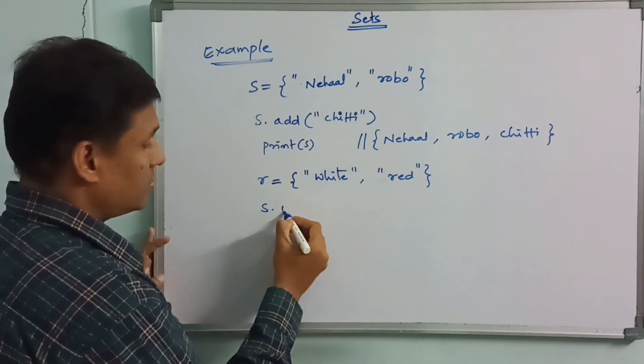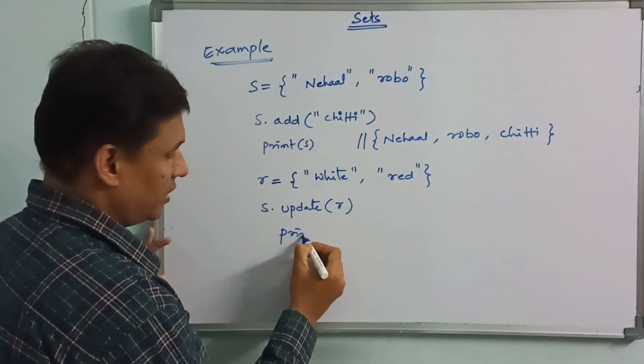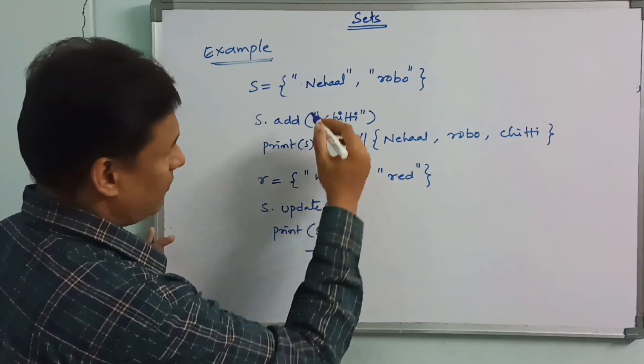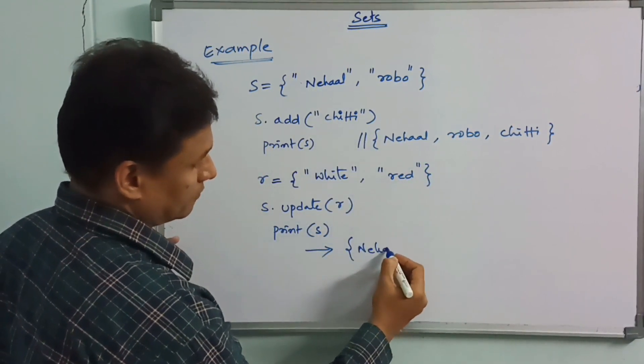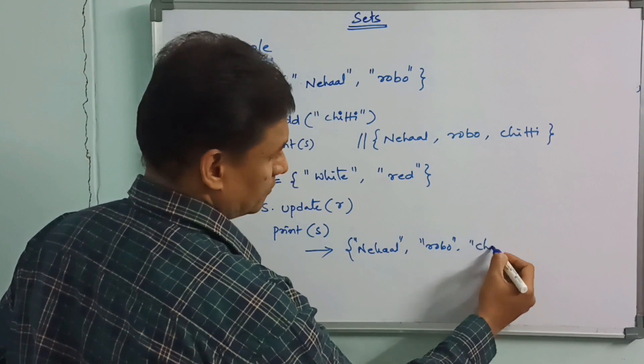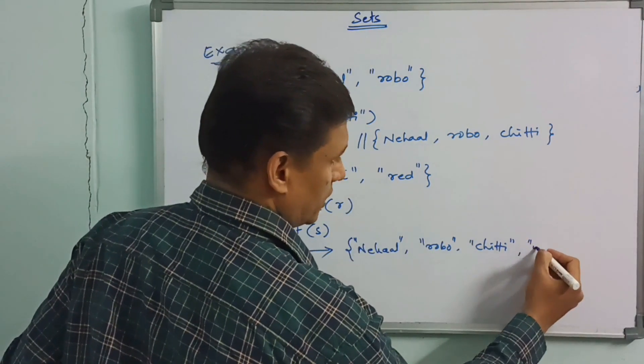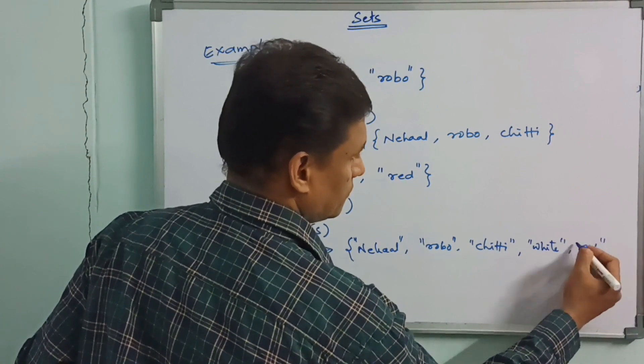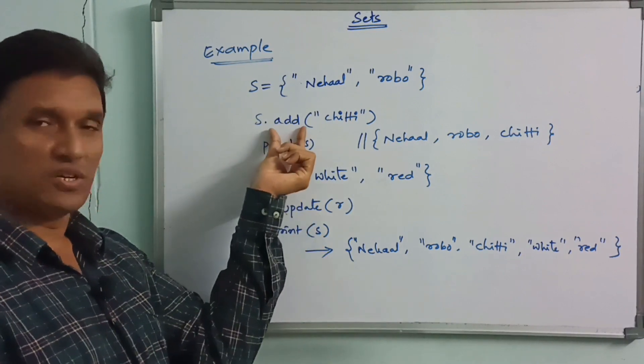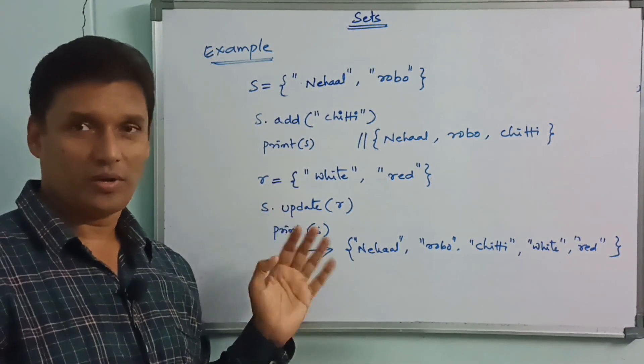We can use s.update. Output is nehal, robo, chitti, white, red. Single element is add, then we use add function. Multiple elements, we can use update function.